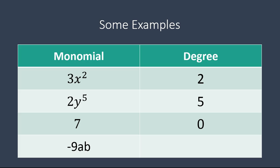Now, this last monomial, negative 9ab, has two things to notice. First, it has variable a and variable b, and neither of them have an exponent written. If you have a variable with no exponent, the exponent is 1. So it's a to the power of 1 and b to the power of 1. The second thing is that you add them together — the degree is the sum of the exponents. So this is a degree of 2: 1 for a and 1 for b.